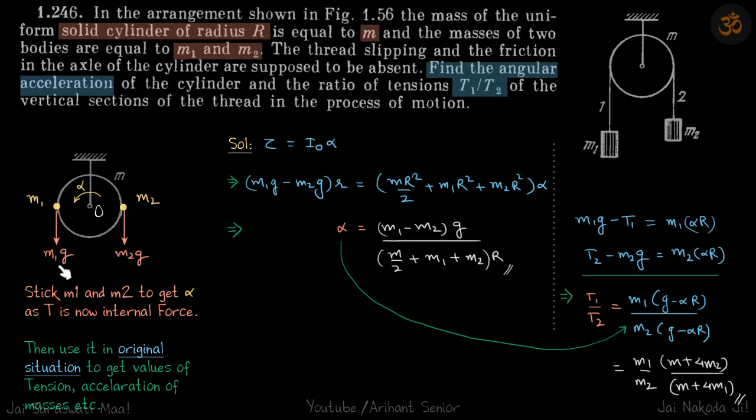We can calculate tension also. So m1g minus t1 will be m1 into alpha r. And for this case, tension minus m2g will be m2 into alpha r. So that will be the original situation.